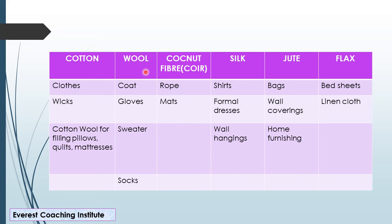Examples of wool products: coats, gloves, sweaters, socks. Then comes coconut fiber. The name of coconut fiber is coir — C-O-I-R. This spelling is a one-mark question. Uses of coir include rope and mats. When you go to villages, you will see rope made from coconut fiber — coir.